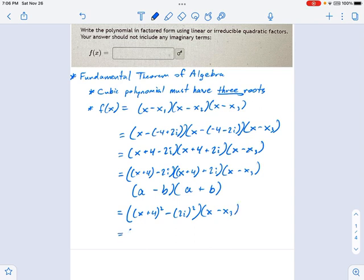x squared plus 8x plus 16, and then 2i squared, and it's negative, turns into plus 4. x minus x3. We simplify one more time and get x squared plus 8x plus 20, that's an irreducible quadratic, and x minus x3.